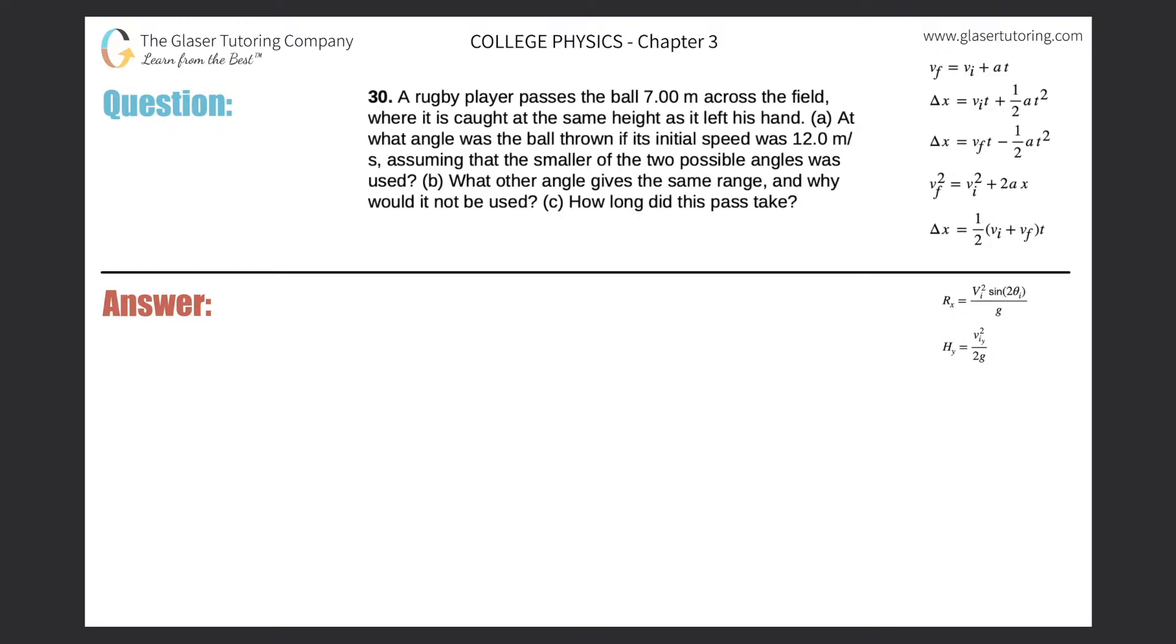Number 30: A rugby player passes the ball 7 meters across the field where it is caught at the same height as it left his hand. At what angle was the ball thrown if its initial speed was 12 meters per second, assuming that the smaller of the two possible angles was used?